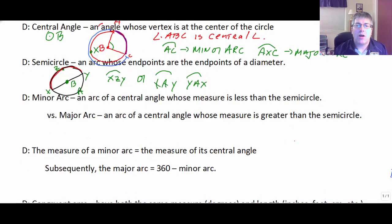And the measure of a minor arc is always equal to the measure of its central angle. So if angle B equals 42 degrees, or we could call it angle ABC equals 42, then I know arc AC is also 42 degrees.